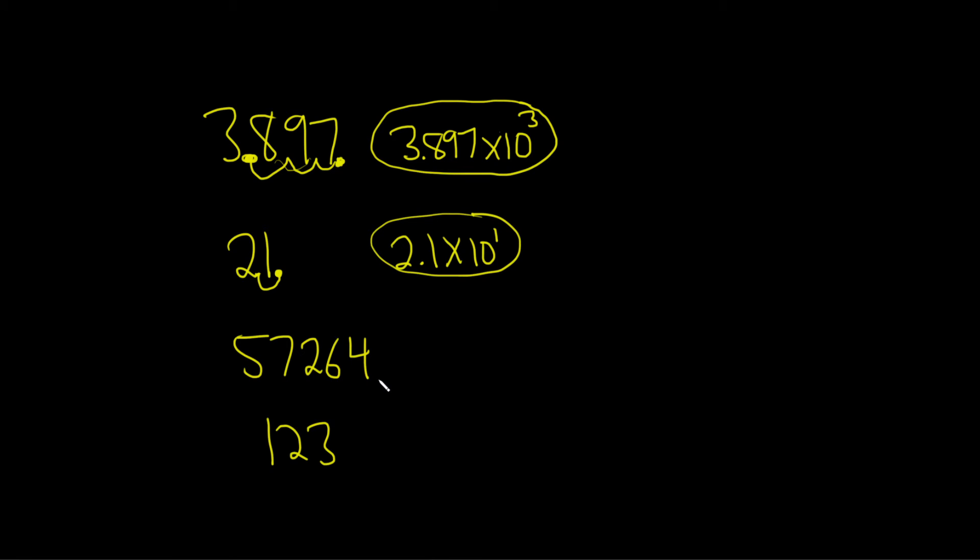Let's do this one. So we start here, 1, 2, 3, 4. So this would be 5.7264 times, and we did it 4 times, so 10 to the 4.